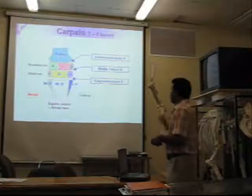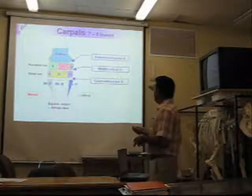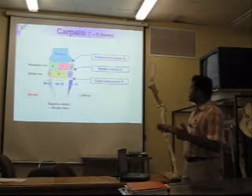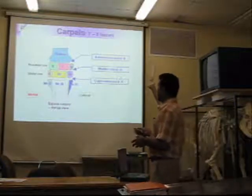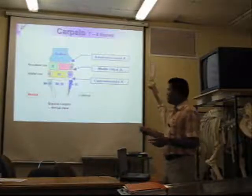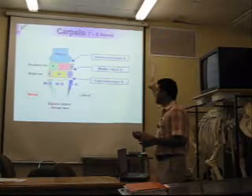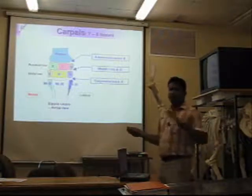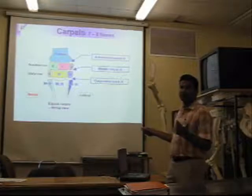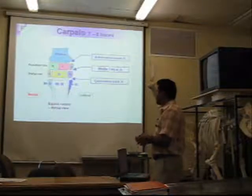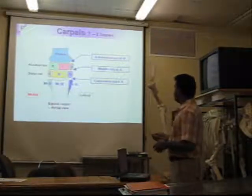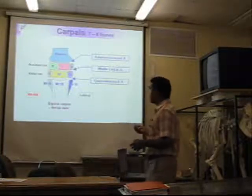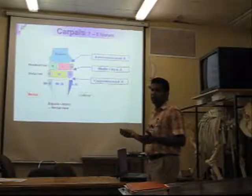In equines, in the proximal row of carpal bones: radial, intermediate, ulnar, and accessory — just behind the ulnar. In the distal row there are only three: second, third, and fourth carpal bones. The first carpal bone may be present or may be absent. In ruminants, the first and second are fused to form one bone. So these bones form three joints: the antebrachiocarpal, middle carpal, and carpometacarpal.